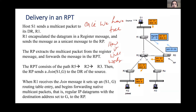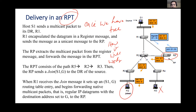This tree is a Rendezvous Point Base Tree (RPT). Router R5 is the Rendezvous Point, and there is one host that has joined this tree. The Join message was sent by the Designated Router. All protocol-related things are sent by the Designated Router.